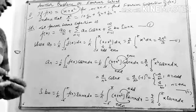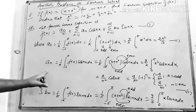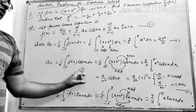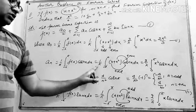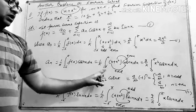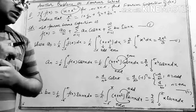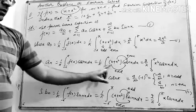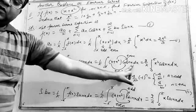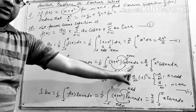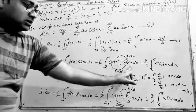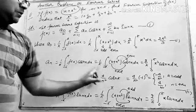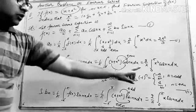aₙ = (1/π) ∫₋π^π f(x) cos(nx) dx = (1/π) ∫₋π^π (x + x²) cos(nx) dx. Again, x·cos(nx) is an odd function so it becomes 0, and x²·cos(nx) is an even function. So we apply the even-odd formula.